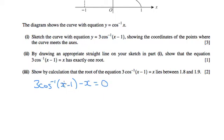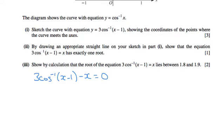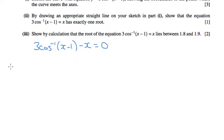Because then when I put in 1.8 and 1.9, one number will be above 0 and the other will be below. So when x equals 1.8, 3 lots of the inverse cos of 1.8 minus 1, minus 1.8, is hopefully going to be a bit above or below 0. So I'm going to type that in.